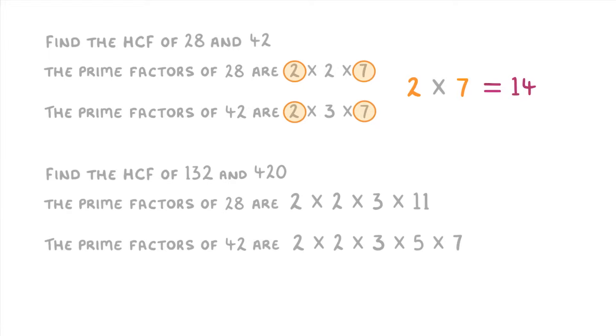For this next question, we're trying to find the HCF of 132 and 420. So, this time, the numbers that occur in both lists will be these 2's, these 2's, and these 3's.